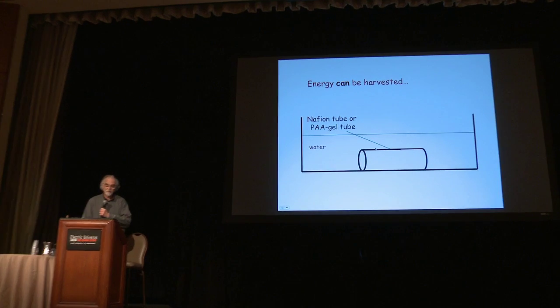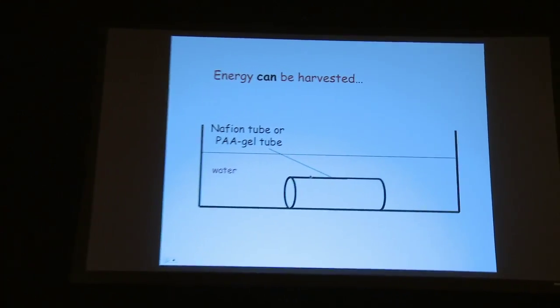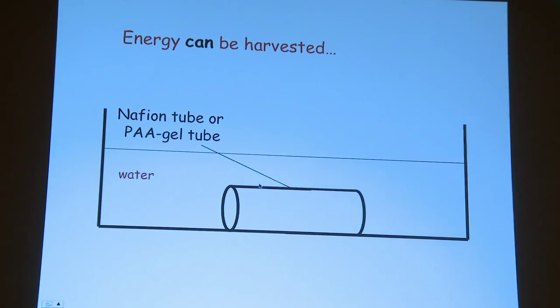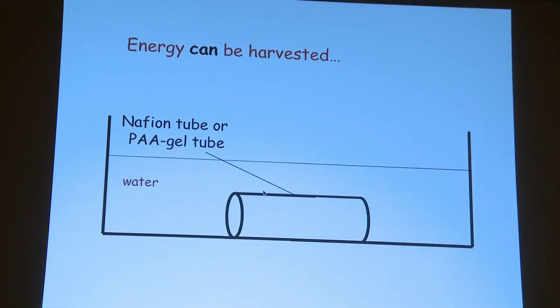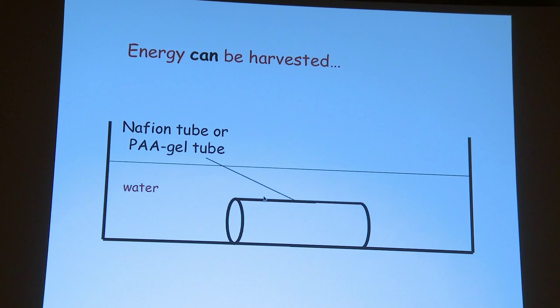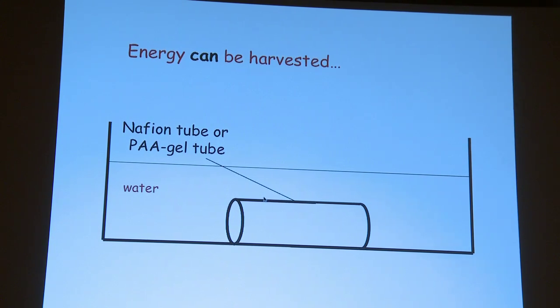So one way we can do it is to put a tube inside the water. This is an empty tube, just like a straw, and we did it first with a Nafion tube, which you can buy, and again with a polyacrylic acid gel in which we cut a tunnel, and the results were similar with both. So we put it in the water, we added some microspheres so we could see what was going on, and we observed from below with a microscope.